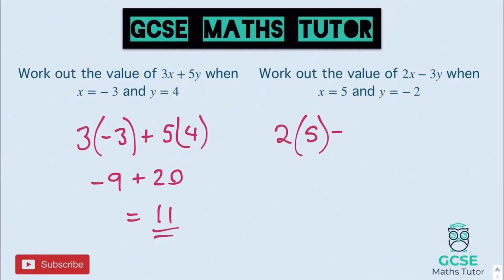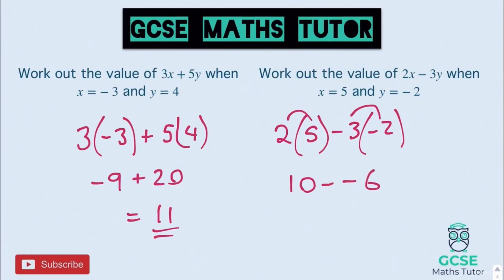For the second question, we have 2 lots of 5 take away 3 lots of negative 2. Getting rid of the brackets: 2 times 5 is 10, take away 3 lots of negative 2 which is negative 6. We have a minus-minus scenario, so taking away a negative turns into a plus. It's 10 plus 6, which is 16. Be very careful with your signs and the rules for adding and subtracting negatives.